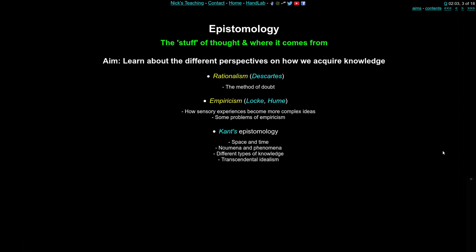Epistemology is the study of thought and where it comes from. The aim in this part of the lecture is for you to learn about the different philosophical perspectives on how we acquire knowledge. The two in particular we want to focus on are rationalism — associated with René Descartes and his method of doubt, doubting his sensory and mental experiences to see what he can work out using reason — and empiricism, associated with Locke and Hume, talking about how very basic sensory experiences can become more complex ideas in the mind.